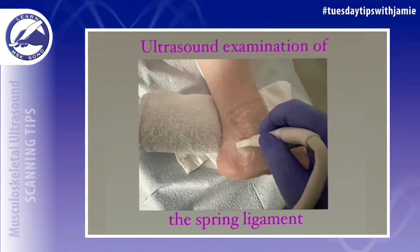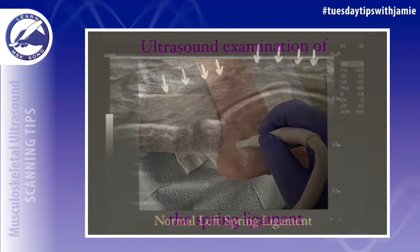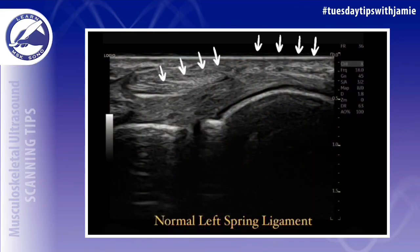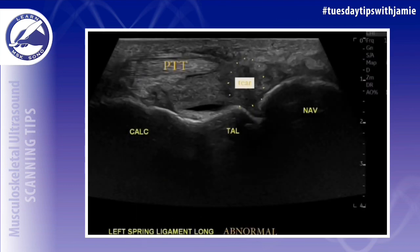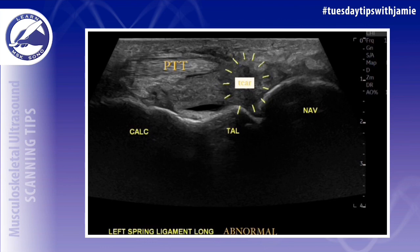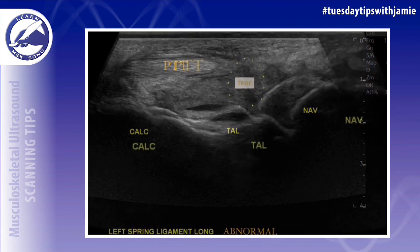Hello, this video is to show you how to locate the spring ligament of the ankle on ultrasound. The spring ligament can be seen on the medial side of the ankle as it passes over the talar head between the calcaneus and the navicular bones.